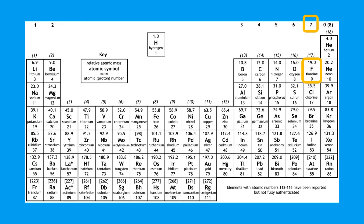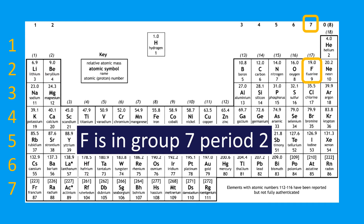In terms of group, the group numbers are across the top — one, two, then you skip a few for the d block, and it picks up again in group three over at the p block. We can see that fluorine is very clearly in group seven. Periods aren't numbered on the periodic table — you need to be able to do that yourself. I've numbered them one through seven down the left-hand side. Be careful: period one has hydrogen and helium in it. Too often students start numbering one next to lithium — that's wrong. So fluorine is group seven, period two.